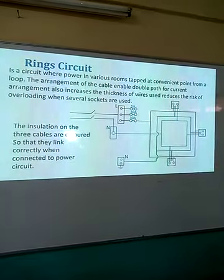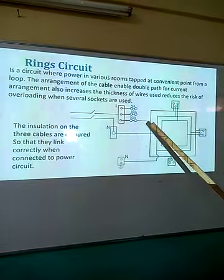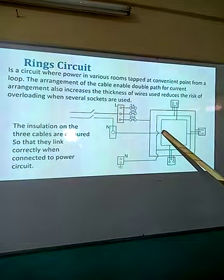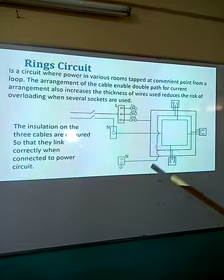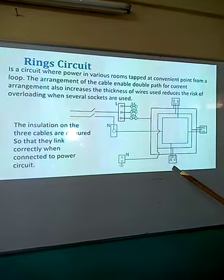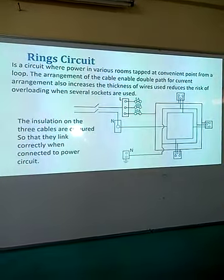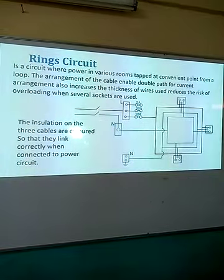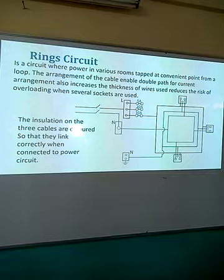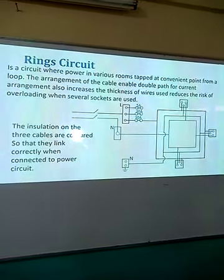Different colors are used to show what these connections are. The red one indicates the live wire, the blue one indicates the neutral, and the green, or green with yellow strips, is used to connect the earth terminal. Generally, this is the representation of how the ring circuit is normally done within our domestic houses.